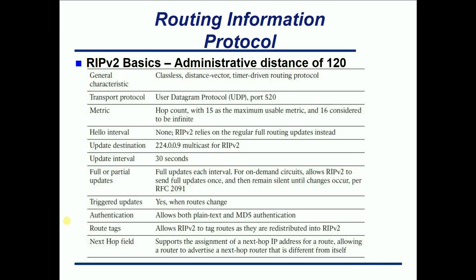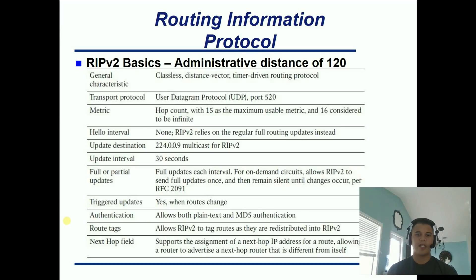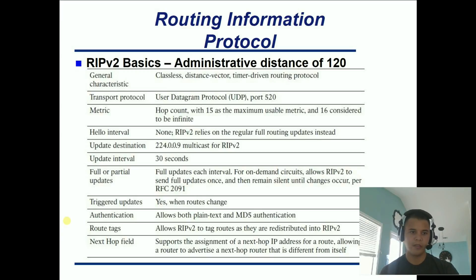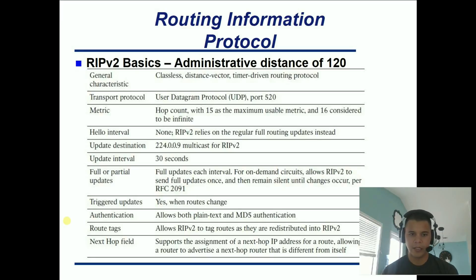Now for RIP version 2 basics at the CCIE level, you have to pretty much memorize this chart. The general characteristics: it uses UDP port 520, metric is hop count with 15 being the maximum usable and 16 being infinite. RIP version 2 doesn't have a hello interval — they don't send hellos, all they do is send out their entire routing table, and that's by default every 30 seconds. The update destination for RIP version 2 uses the multicast address 224.0.0.9 — that's important to know.